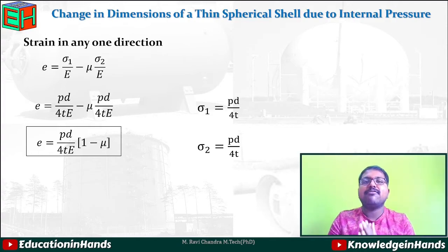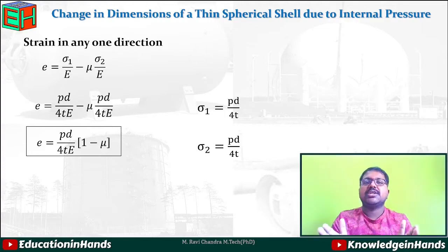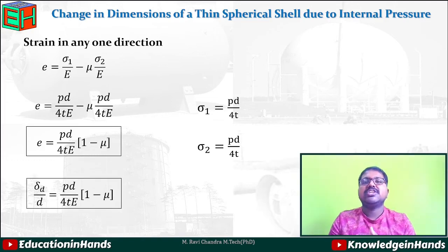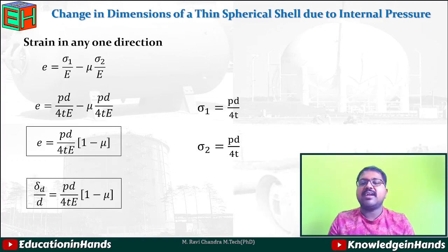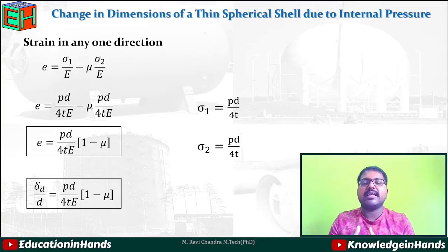This simplifies to strain = (pd/4tE)(1 − μ). Since strain is change in dimension divided by original dimension — here the dimension is diameter — we get δd/d = (pd/4tE)(1 − μ), and therefore δd = pd²/4tE × (1 − μ).